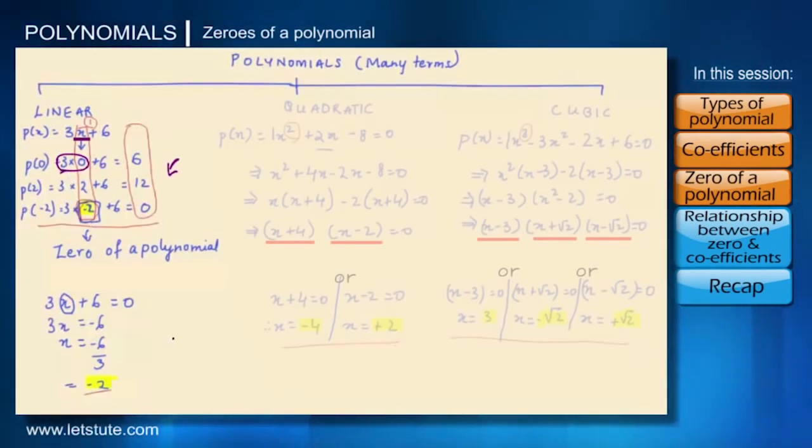So we can say there is a kind of relationship that exists between zeros of a polynomial or x and the coefficients of a polynomial. And what is that?